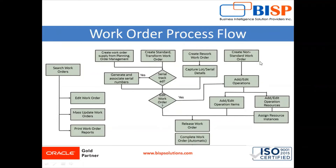The work order process flow basically starts with searching work orders. You can search your work order in the application. After searching, you can edit your work order, perform mass updates, and print the work order or the work order report. For your basic information, you can search your work order in the application.